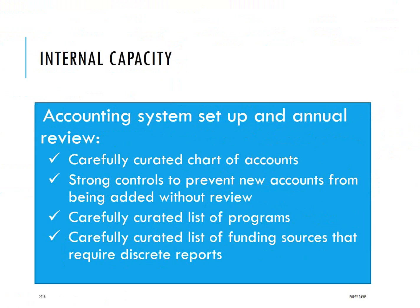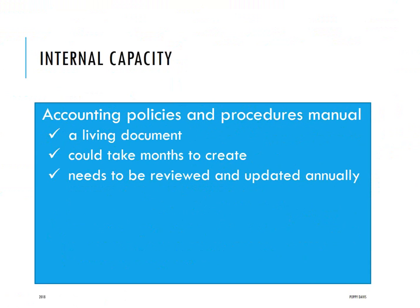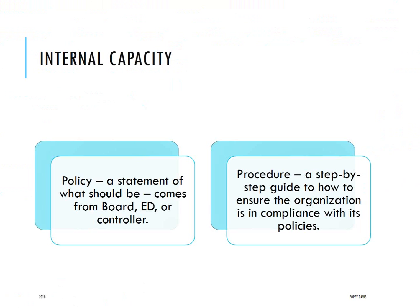You need to have a discussion among several people to understand which funding sources require separate reporting. Not every funding source requires it, so you don't want to do unnecessary work, but you also want to set it up from the beginning to do the required reporting. Backing all of this up is an accounting policies and procedures manual. This should be a living document — it could take months or more than a year to create. Once up and running, it needs to be reviewed and updated annually so it's a current, accurate reflection of how things work.